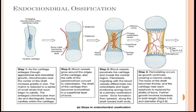The first step is that cartilage enlarges through appositional and interstitial growth. Chondrocytes near the center of the shaft increase greatly in size, the matrix is reduced to a series of small struts that soon become calcified, and the enlarged chondrocytes then die and disintegrate, leaving cavities within the cartilage.